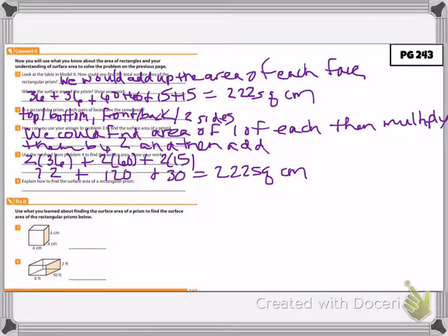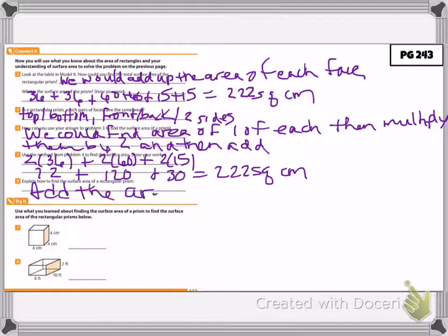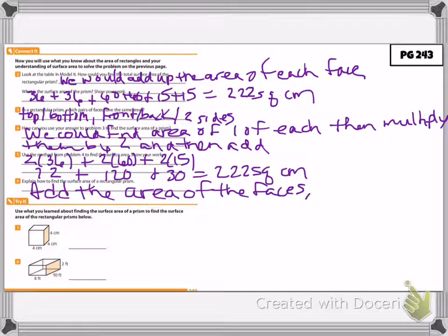Explain how to find the surface area of a rectangular prism: add the area of the faces. Now use what we just did to find the surface area of each of the rectangular prisms below, and then we will go over them.